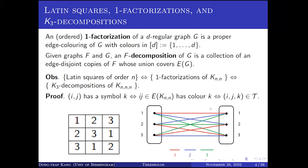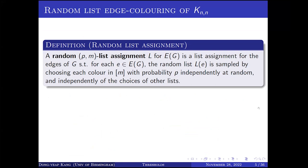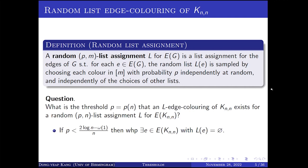An edge ij in the complete bipartite graph with color k corresponds to a K3 copy ijk in the K3 decomposition of the complete tripartite graph. This figure describes the first correspondence.